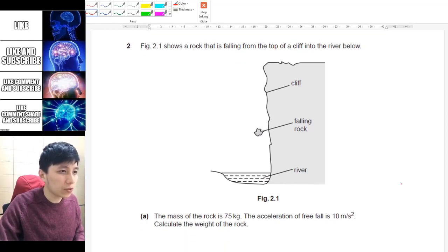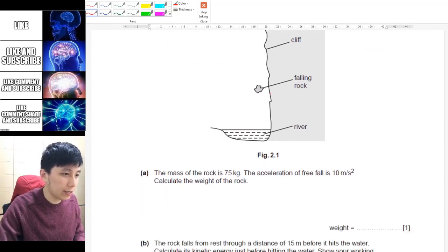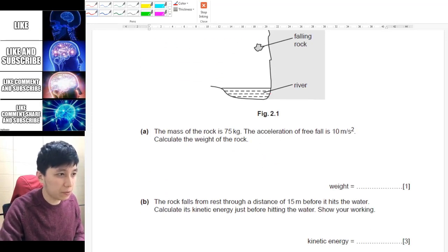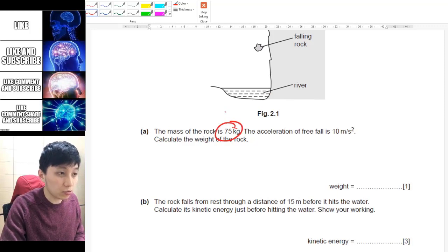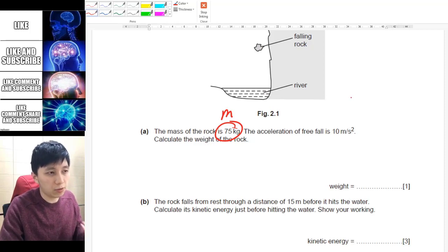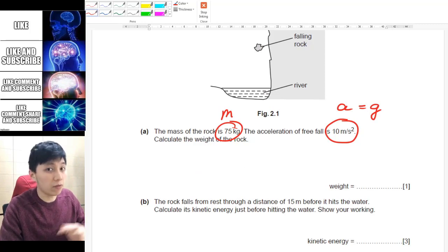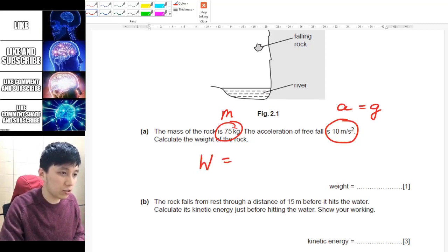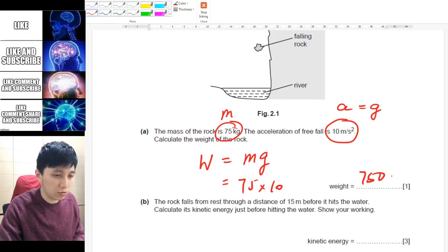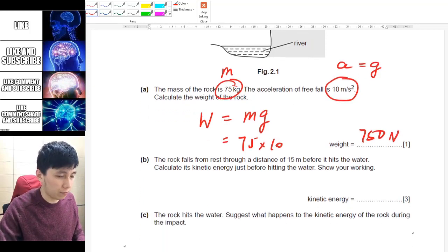So for the first question, it shows you there is a rock that is falling and obviously something to do with GPE probably. It tells you the mass, so usually what I'll do when I see a number in the question is I will put the symbol next to it, so you know this is m, mass, and here we've got a, or we can also say it's g in this question. So it asks you to find the weight, so this is something that you have learned in the previous chapter with the equation w equals mg, and that is 75 times 10, so 750, the unit should be newton because it's a force for the weight.